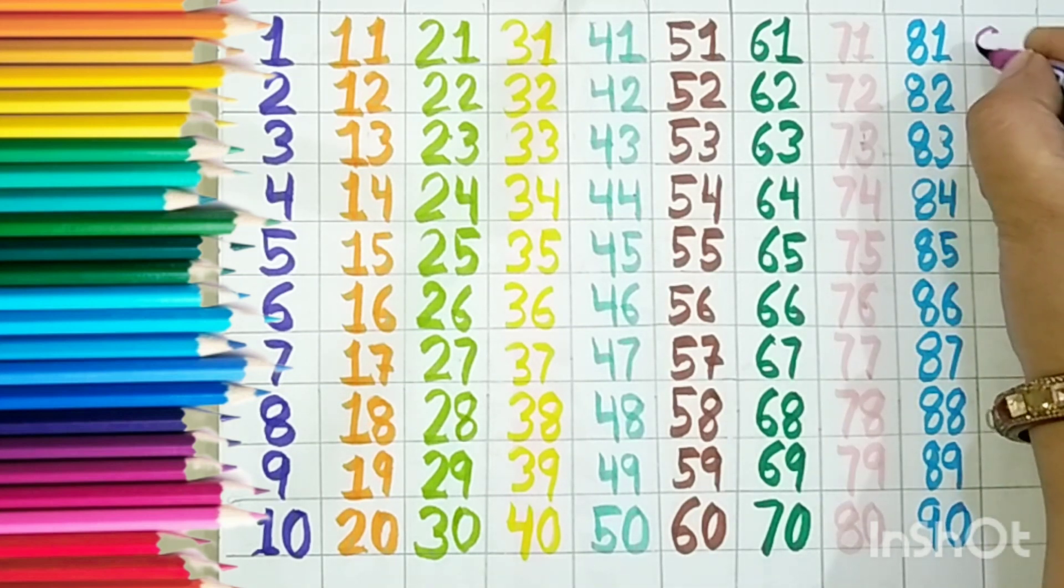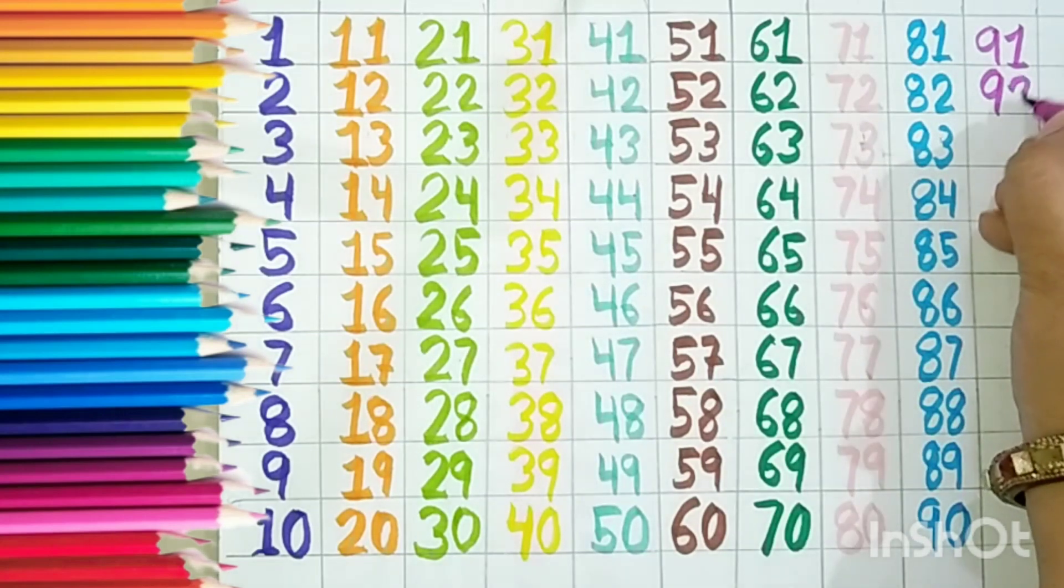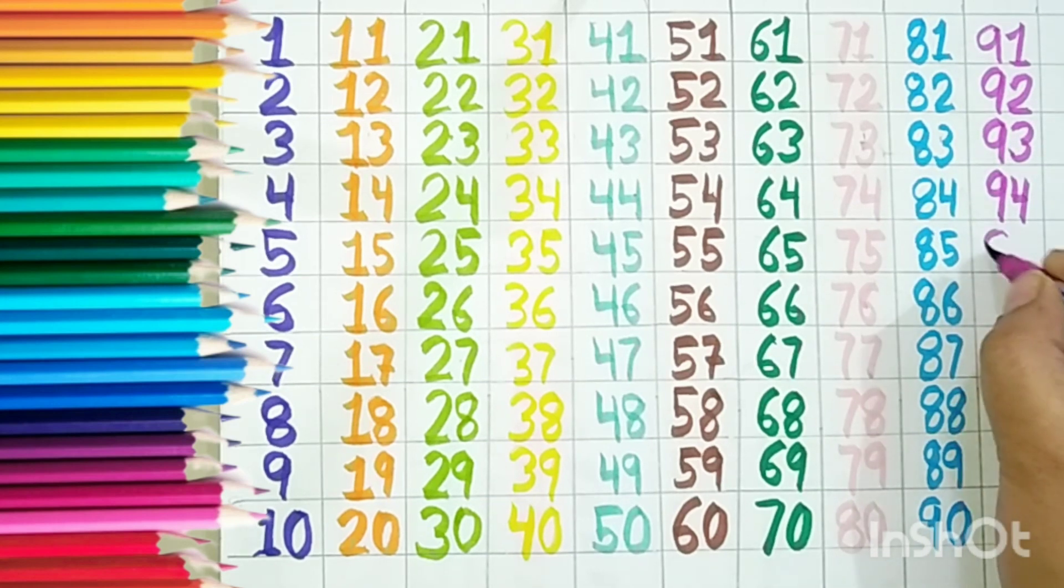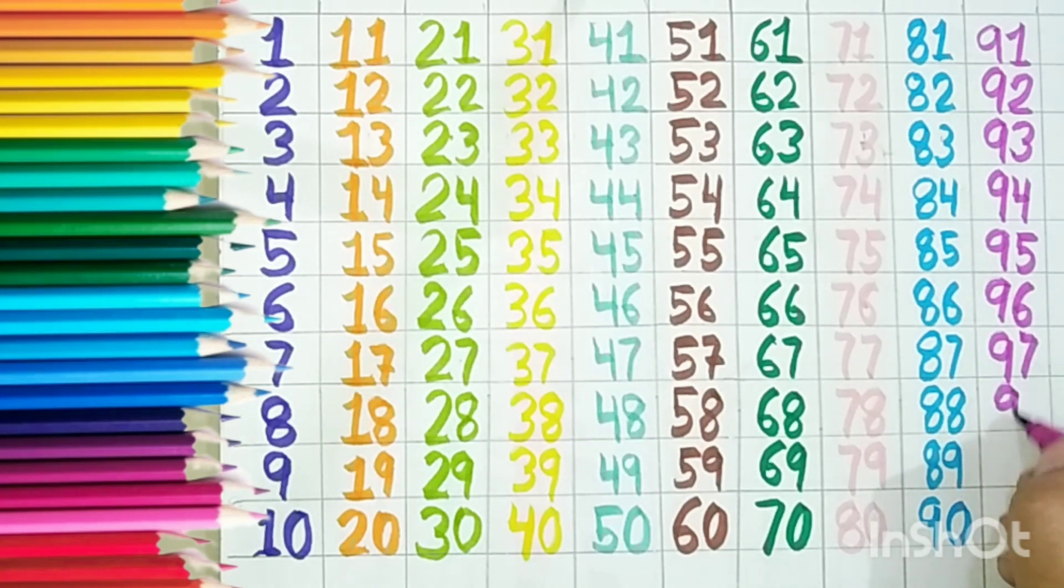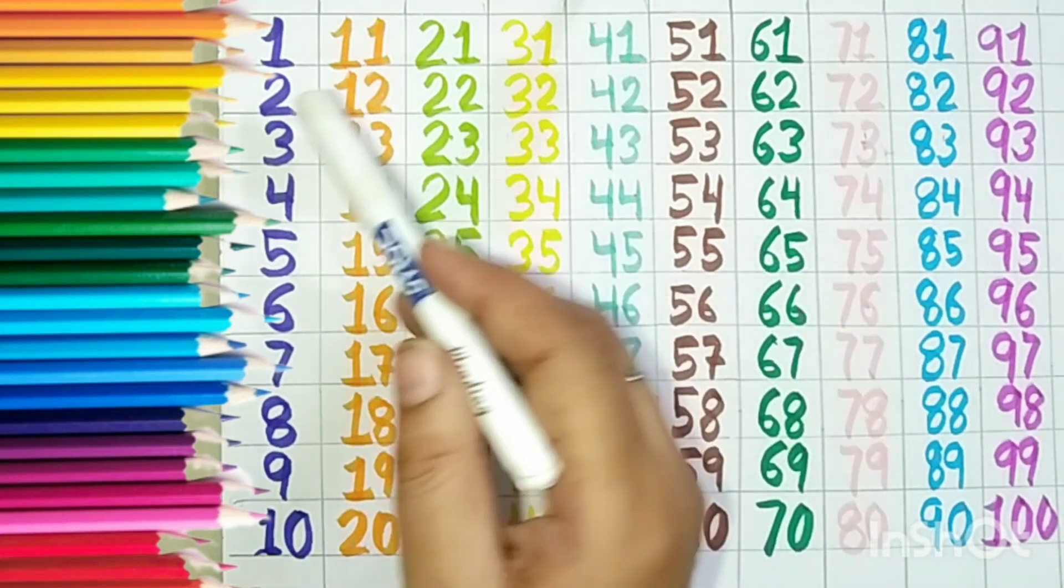91, 92, 93, 94, 95, 96, 97, 98, 99, 1 double 0, 100. Now let us learn the color.